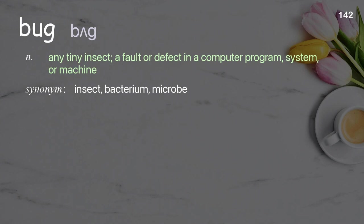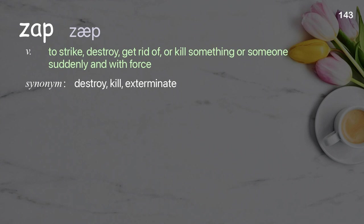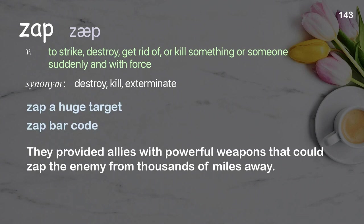Bug: any tiny insect; a fault or defect in a computer program, system, or machine. Examples: bug bites, number of bug fixes. I found a stink bug crawling across the ceiling. Zap: to strike, destroy, get rid of, or kill something or someone suddenly and with force. Examples: zap a huge target, zap barcode. They provided allies with powerful weapons that could zap the enemy from thousands of miles away.